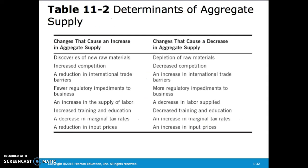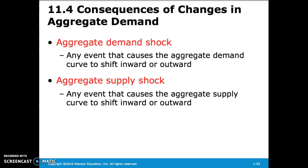This table discusses some of the causes for changes in aggregate supply. An aggregate demand shock is any event that causes the aggregate demand curve to shift inward or outward. Similarly, an aggregate supply shock is an event that causes aggregate supply to shift inward or outward.